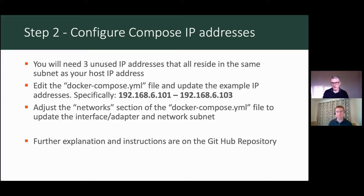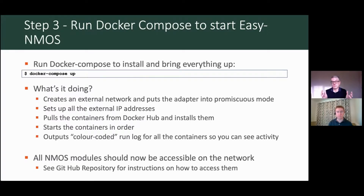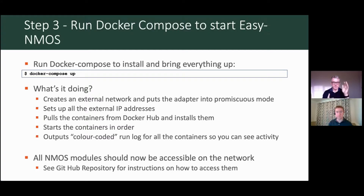We've done installation, we've done configuration, and the final step is just getting it up and running. If everything's right, this is now just one command: docker compose up. It will create all of the network interfaces automatically, download the containers from the internet if needed, and then start them one after another. The docker-compose.yaml file is designed so that it starts the registry first, then brings up the virtual node — because the node needs to talk to the registry — and finally brings up the NMOS testing container.